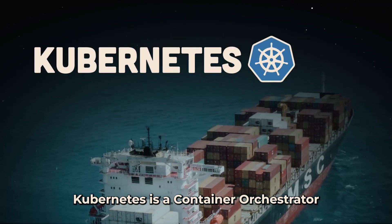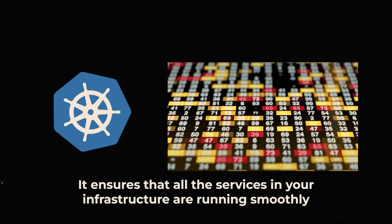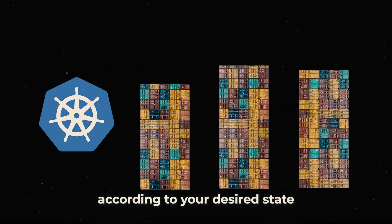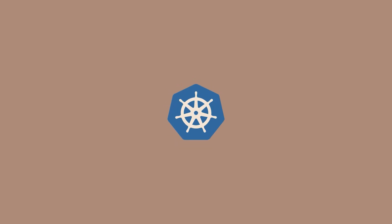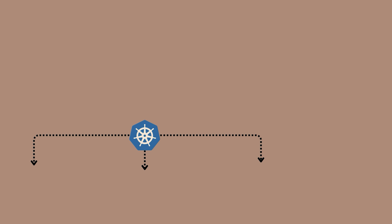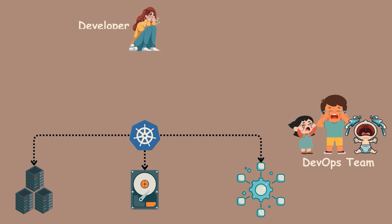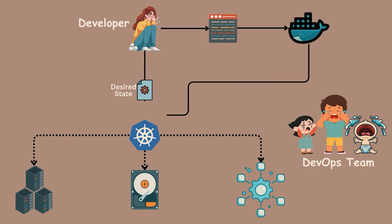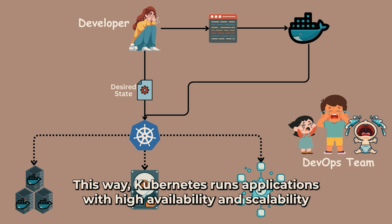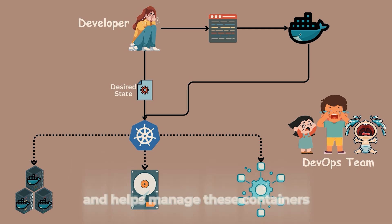Kubernetes is a container orchestrator. It ensures that all the services in your infrastructure are running smoothly according to your desired state. A Kubernetes cluster sits on top of your entire infrastructure and controls all your resources such as compute, storage, networking, etc. This cluster is usually set up and administered by a DevOps or a platform engineering team. A developer creates an application, packages it into a container image, and asks Kubernetes to run containers using that image. They submit the desired state to Kubernetes, who then deploys the containers to servers and provides them with the necessary resources. This way, Kubernetes runs applications with high availability and scalability.